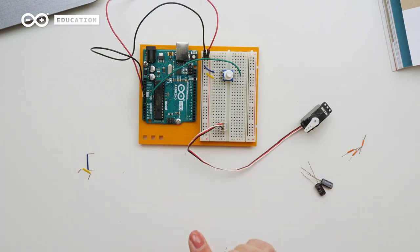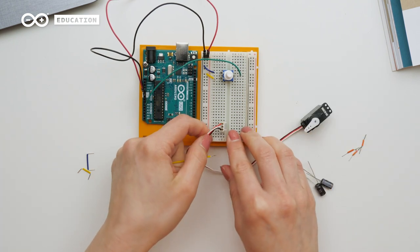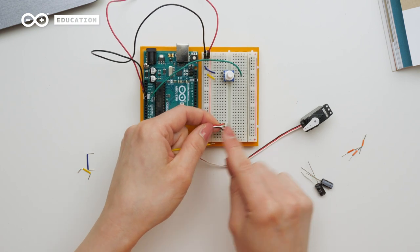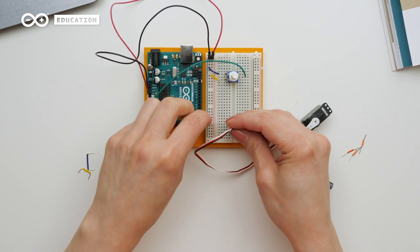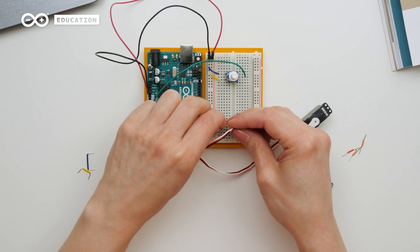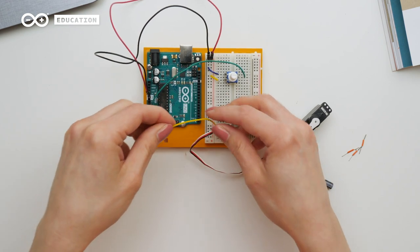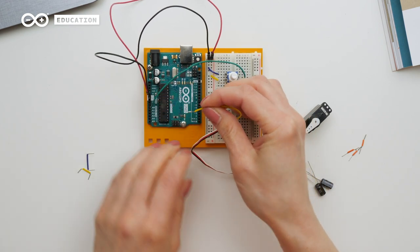Now we'll connect it. As we can see, I have the signal in the middle, so the middle leg here goes to digital pin 9.